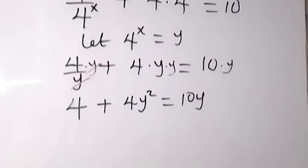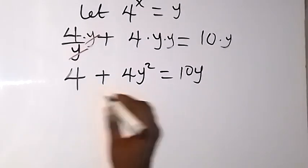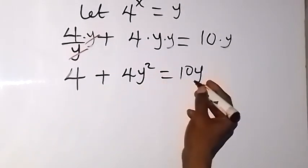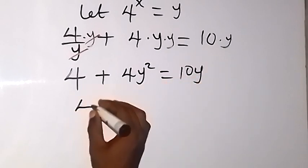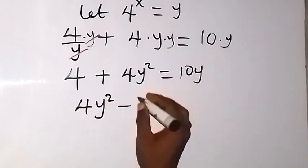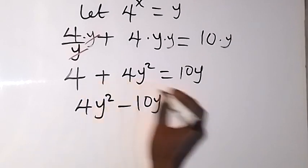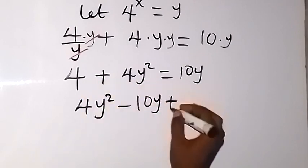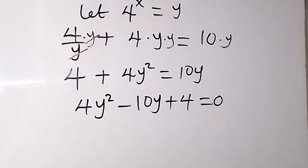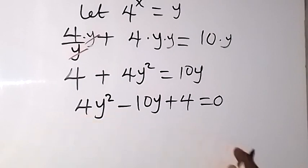We rearrange this to form a quadratic equation. Bringing 10y to the left side gives us 4y squared minus 10y plus 4 equals 0.